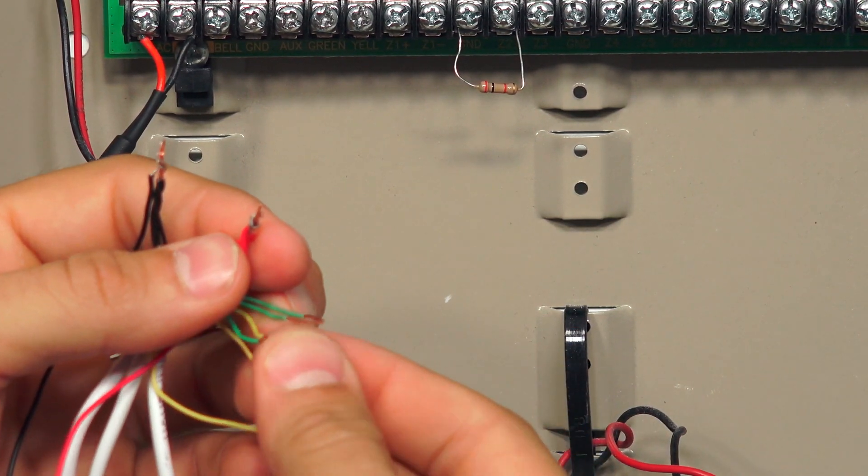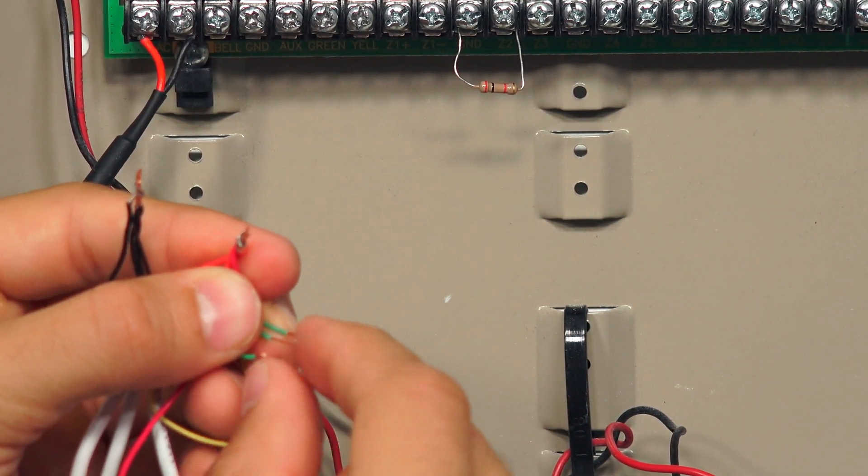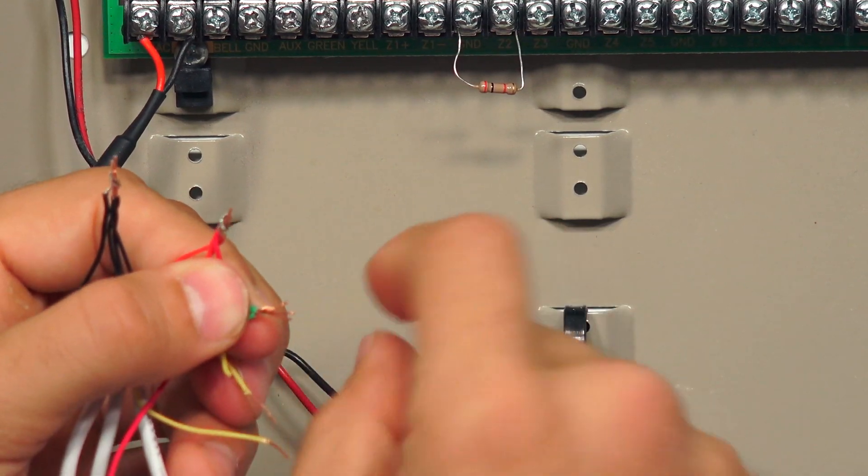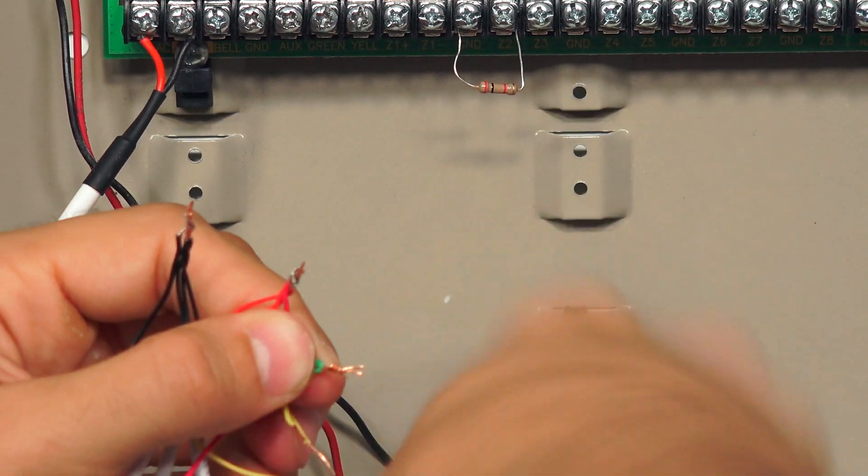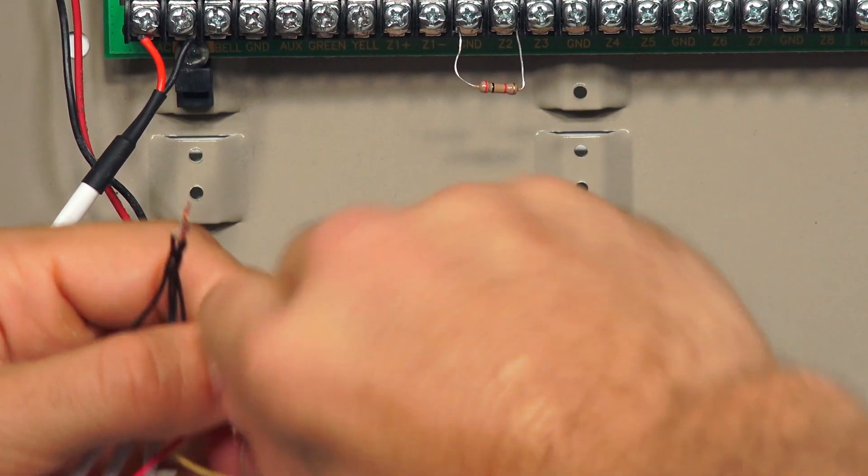Now, ideally, if you have a pair of pliers or linemen, using a tool will save your fingers, and it'll make this process much easier. Just grab it, turn it around, and make sure your splice is nice and secure.